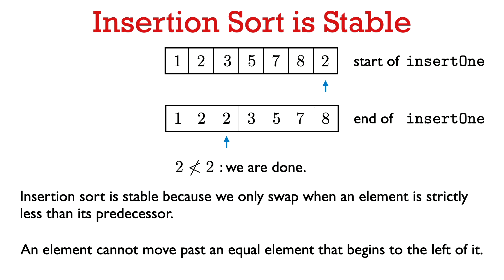Why do we single out the property of stability with sorting algorithms? Let's see why this can be a useful property.